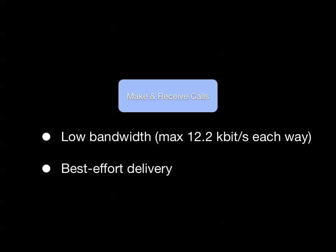To support those features, a mobile network needs a bare minimum feature set. For voice calls, you only need 12.2 kilobits per second in either direction. The transmission protocol for voice calls is best-effort, because you can drop tiny bits of audio and the person on the other end still has a vague idea of what you're saying. Humans are good at exponential back-off — they'll repeat themselves until you understand. SMS requires only 160 bytes sent on the back channels of a network, also best-effort.